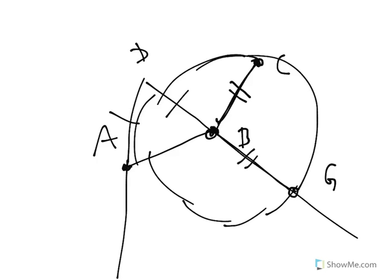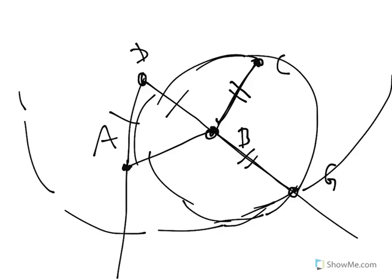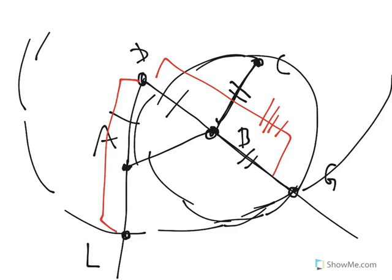There's only one more step: make a circle whose center is up here at D, and it goes through point G as well — a large circle. I'll call this endpoint L, where the circle intersects. DG is definitely the same length as DL, but DB here is the same as DA. So if we subtract DB from DG, we get one segment, and if we subtract DA from DL, we get the other. So those two things are congruent.